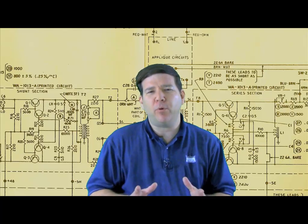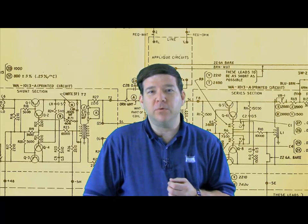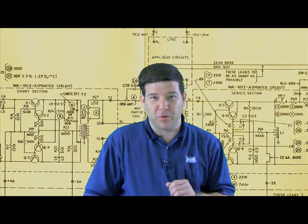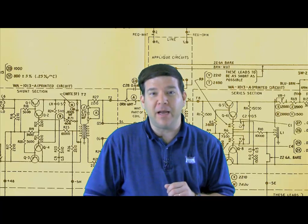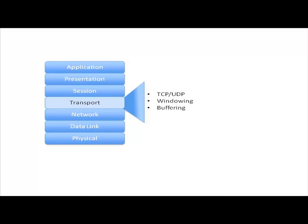At the transport layer, we want to focus on three primary things. Number one, the protocols, some of the protocols that reside at layer four. Number two, we want to think about how windowing occurs with one of those protocols, specifically TCP, the transmission control protocol. And finally, let's talk about buffering. We want to talk about these three main topics: TCP and UDP being the primary protocols at layer four, how TCP can perform windowing, and how we can perform buffering.